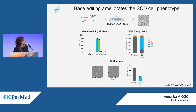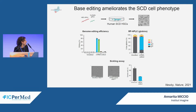This strategy was successfully tested by the group of Mitch Weiss and David Liu in human hematopoietic stem cells from sickle cell disease patients. They achieved high genome editing efficiency of around 80% and good expression of the Makassar beta-globin, shown in blue, which led to correction of the sickling phenotype — a reduced frequency of sickle cells in samples expressing the Makassar beta-globin.